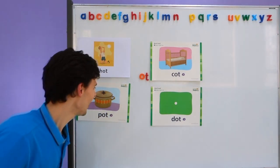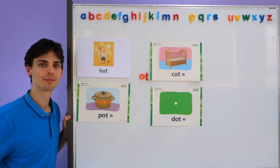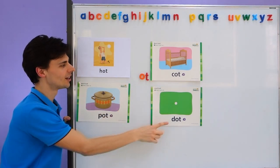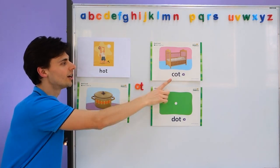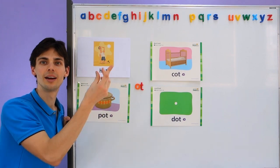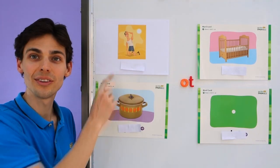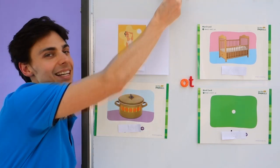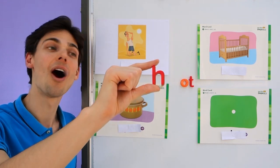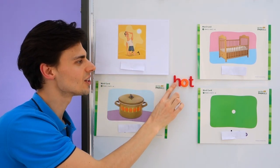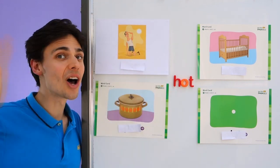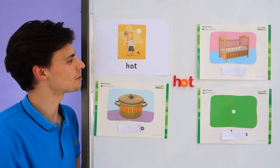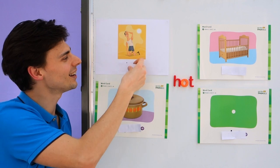Shall we play a game? Let's play a game. See if you can remember first. We have hot, pot, cot, dot. Hot, pot, cot, dot. Three, two, one. We have one, two, three, four. Can you remember? Where is... Let's start with an easy one. Where is H-ot, hot? Which one is hot? Shall we see? Yes, we have H-ot, hot. Very good.